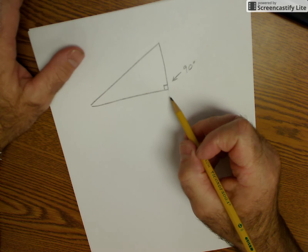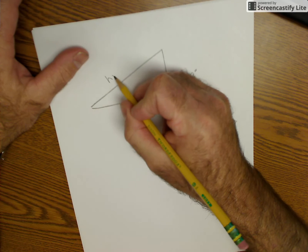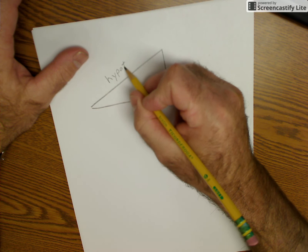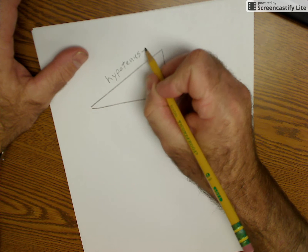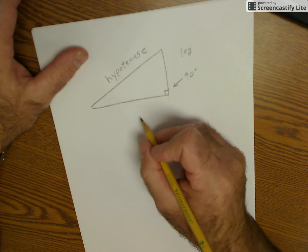So it's perpendicular, a 90 degree angle. If we're talking about right triangles, the side opposite that right angle is always called the hypotenuse. And then these are legs. So this is a leg, and this is a leg.